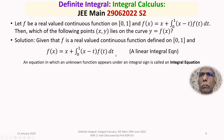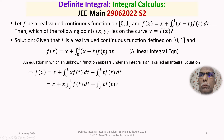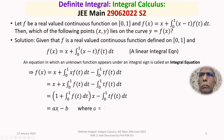We write f(x) = x + ∫₀¹ x·f(t) dt − ∫₀¹ t·f(t) dt. Since the integration is with respect to t, x comes out of the first integral: f(x) = x + x·∫₀¹ f(t) dt − ∫₀¹ t·f(t) dt. Taking x common from the first two terms gives f(x) = [1 + ∫₀¹ f(t) dt]·x − ∫₀¹ t·f(t) dt.